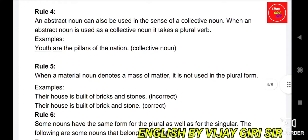Rule 4: An abstract noun can also be used in the sense of a collective noun. When an abstract noun is used as a collective noun, it takes a plural verb. For example, 'Youth are the pillars of the nation.' Here youth is an abstract noun used as a collective noun, so it takes the plural verb 'are', not 'is'.